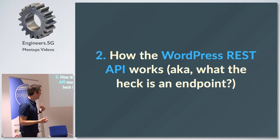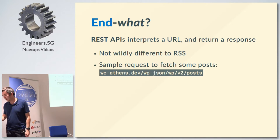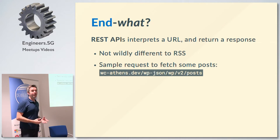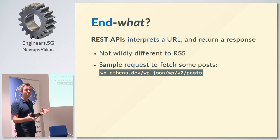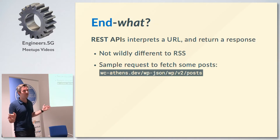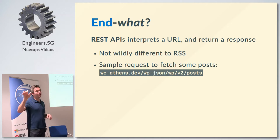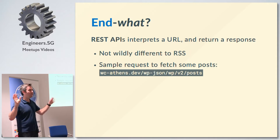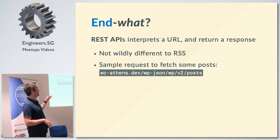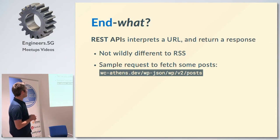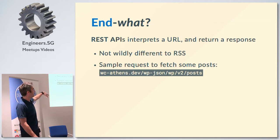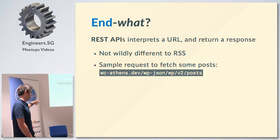How does the REST API actually work, and what is an endpoint? REST APIs effectively interpret a URL and return a response — they figure out from the URL what the person typing it is trying to get. In some ways it's not massively different to RSS. If you have the REST API activated, you go to yourwebsite.com/wp-json/wp/v2/posts to get posts. The 'wp-json' is the root part of the REST API, a bit like wp-admin.